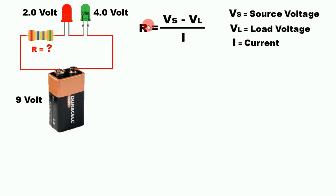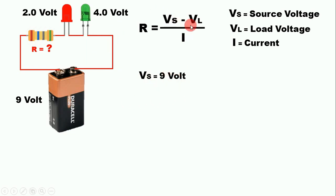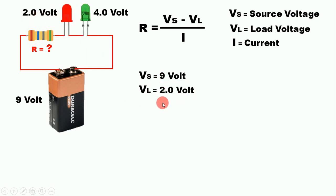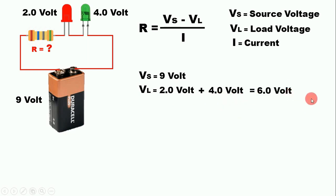First we need to know the source voltage. With a 9 volt battery, Vs = 9 volts. Next we find the load voltage. For each red LED the operating voltage is 2 volts. For two LEDs in series we write 2 volts for each and add them together: 2 + 2 = 4... giving a total load voltage of 6 volts.